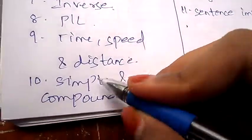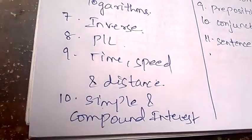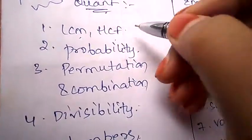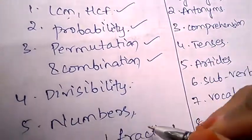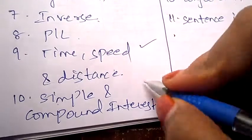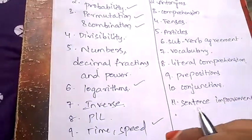Time, speed and distance, simple interest and compound interest. So out of this, the more weightage equations are LCM, HCF, probability, permutation and combination, logarithms, time, speed and distance, and simple and compound interest. All are important, but out of these, these are having more weightage.